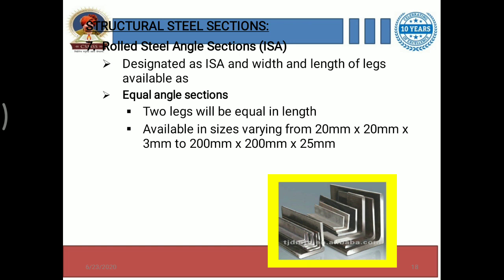These sizes are available from 20 mm x 20 mm x 3 mm up to 200 mm x 200 mm x 25 mm. This is the range of Indian Standard Equal Angle sections. The name itself indicates that equal angle means its width and length are always the same, though its thickness may vary.